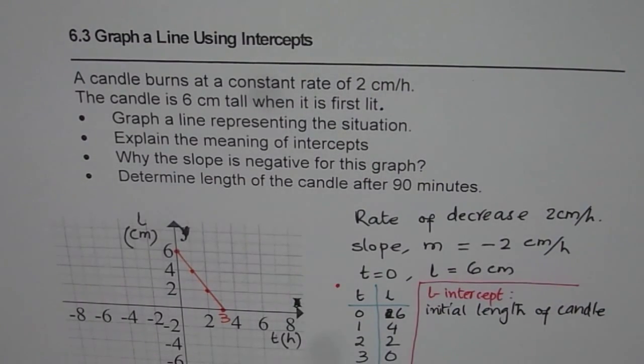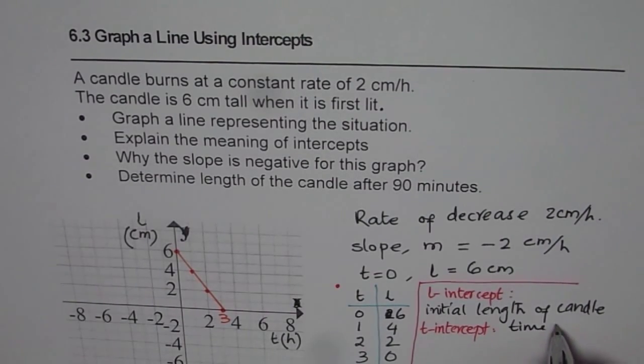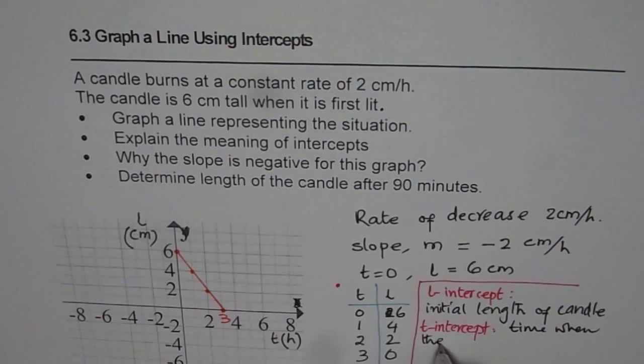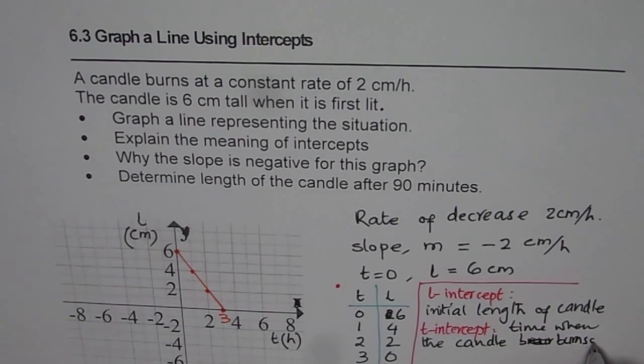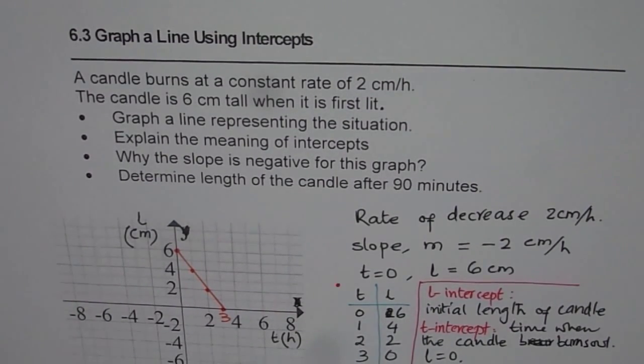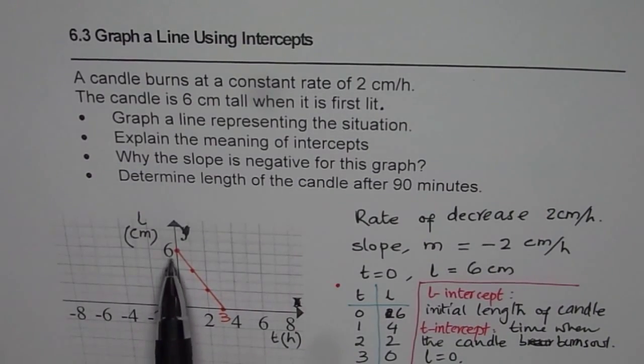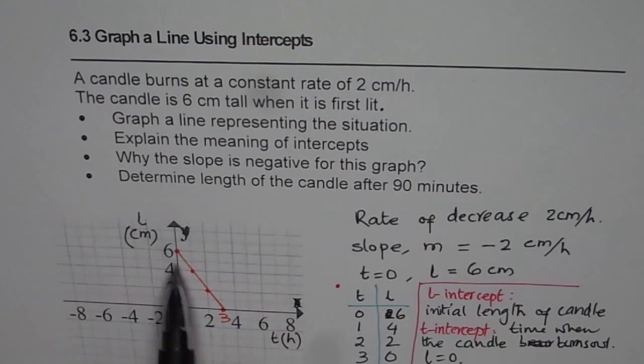How about the t-intercept? Now, t-intercept is the time when the length of the candle is 0. So it's a time when the candle burns out. Or the length is 0. At that time, length is 0. Perfect. So that is the significance of these two intercepts. So one gives you the initial value. The other gives you, in this case, the final time when the whole candle burns out.